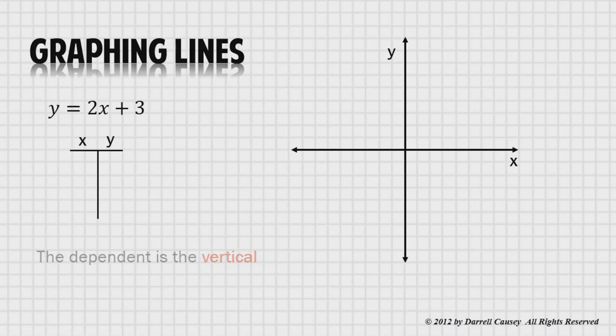If you don't like the t-table method, use whatever method you prefer. But you need to keep things orderly and I like the t-table. Oh, by the way, the independent is the horizontal axis and the dependent is always on the vertical axis. You want to start with the independent and choose a number as simple as possible. I'm going to choose 0 and put that number into the equation and solve for y.